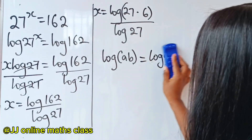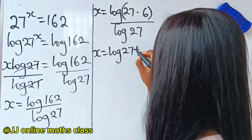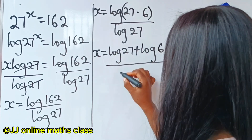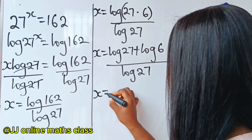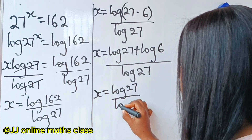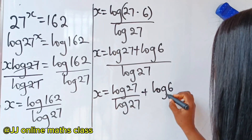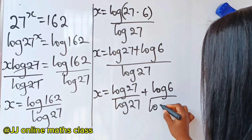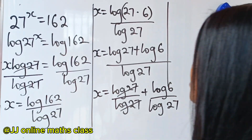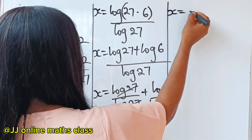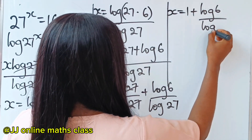Since we have that product rule, we are going to split the logarithm. So we have x is equal to log 27 plus log 6, all divided by log 27. We can then separate this fraction: x is equal to log 27 divided by log 27, plus log 6 divided by log 27. When log 27 divides log 27, we get 1, so x is equal to 1 plus log 6 divided by log 27.